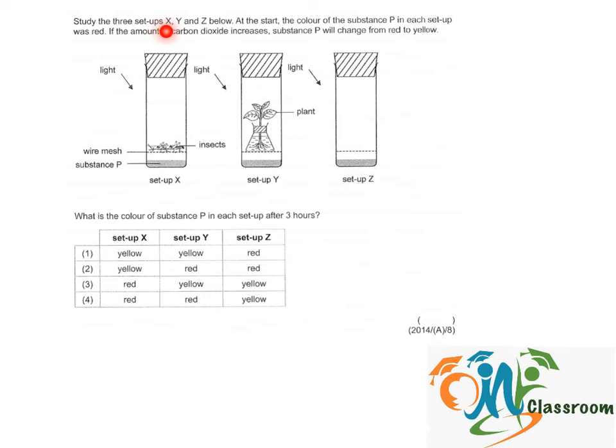Study the three setups X, Y and Z below. At the start, the colour of the substance P in each setup was red. If the amount of carbon dioxide increases, substance P will change from red to yellow.